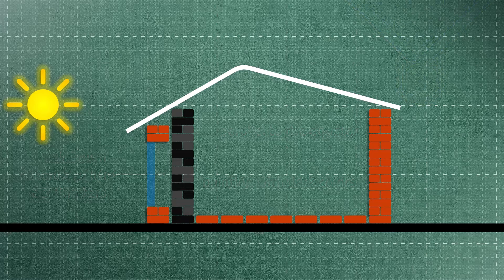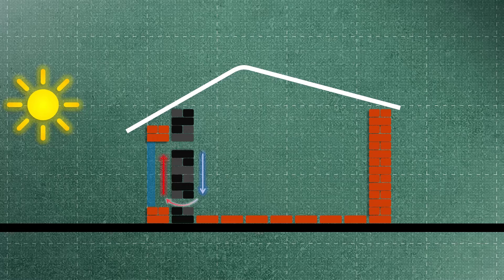In the early designs of the Trombe wall, there were vents on the walls to allow the heat to spread with natural ventilation, but now we know that these vents are inefficient.